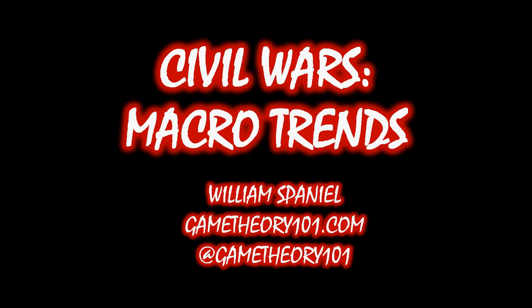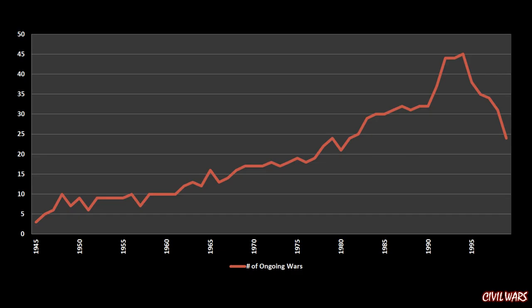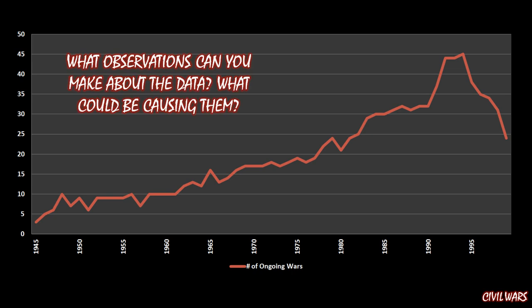What I'm going to do in this lecture is show you a single graph. What we have on this graph is the number of ongoing civil wars over time from 1945 to 2000. On the y-axis we have a range from zero civil wars all the way up to 50. I'd like you to pause and think about what observations you can make about this graph, and also think about what might be causing those observations. Go ahead and pause now, and in the comments section below this video, write down your observations and speculate on what might be causing them.